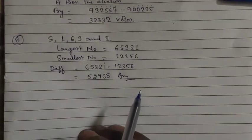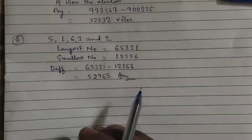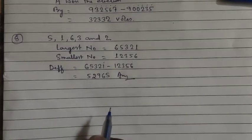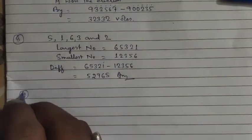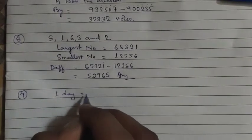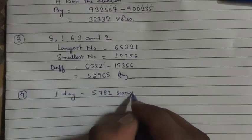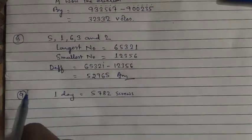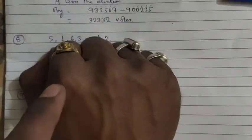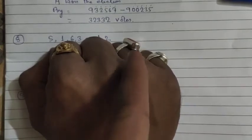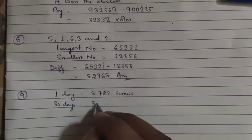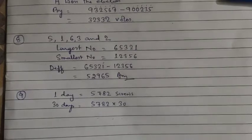Question 9: A machine manufactures 5,782 screws every day. How many screws will it manufacture in the month of April? April has 30 days — you can remember using your knuckles. So the number of screws = 5,782 multiplied by 30. You have to complete the calculation by your own.